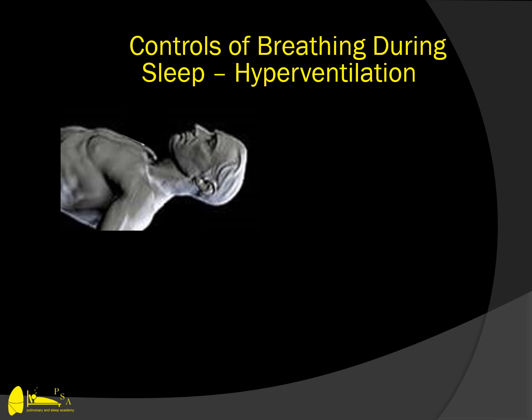A more common mechanism for central sleep apnea is one that involves hyperventilation. In this regard, it is important to understand a concept known as loop gain. This includes two elements, the first known as plant gain, where the lung itself, based on stimulation of afferent receptors in the lung, can lead to hyperventilation that will drive the PCO2 down potentially even below the apnea threshold.